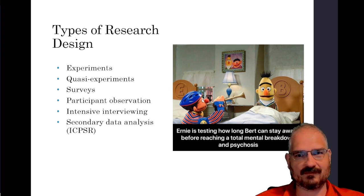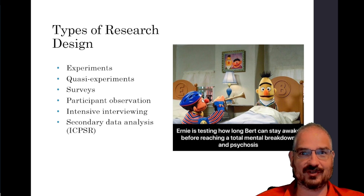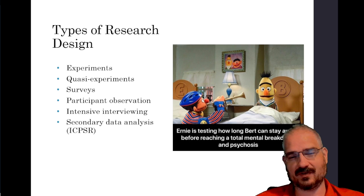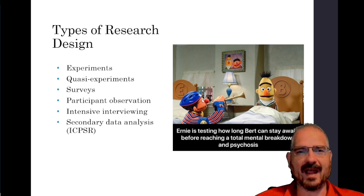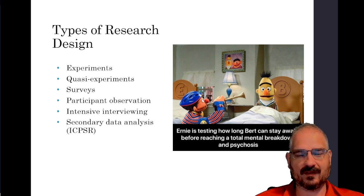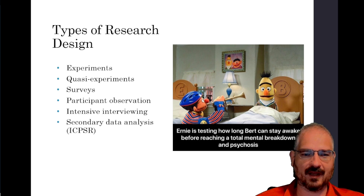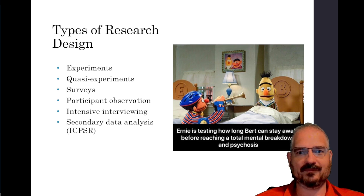Sometimes it's physically impossible, due to the nature of reality or legal or ethical requirements, to do a true experiment. Probably the most common kind of research design in the 21st century is the survey, which everybody watching this video has likely taken at least once. There's also participant observation, where somebody goes and lives amongst some group to observe how they interact and what their lives are like — like the book I mentioned about the researcher living with female gang members.